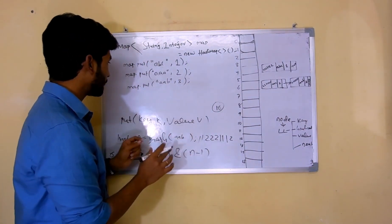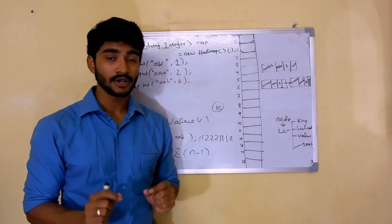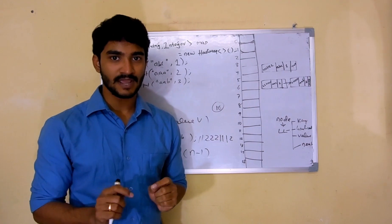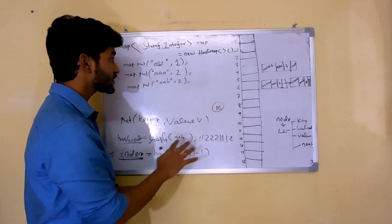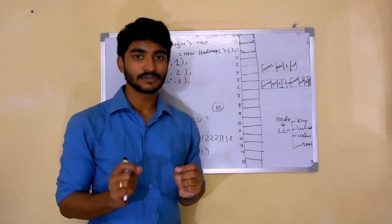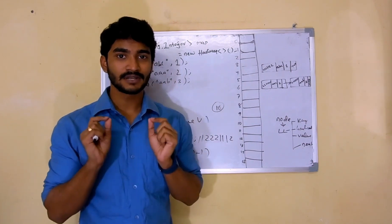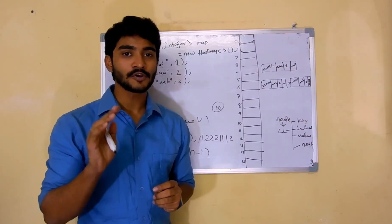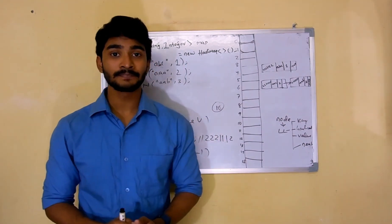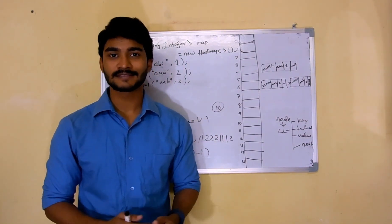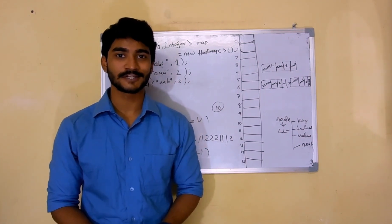This is how a typical put operation in a HashMap works internally. Now I'll take you to Eclipse where we'll debug these things and verify that whatever we've discussed for the last 10 minutes is actually working in a similar way. Right after that, I'll explain how the get operation works.